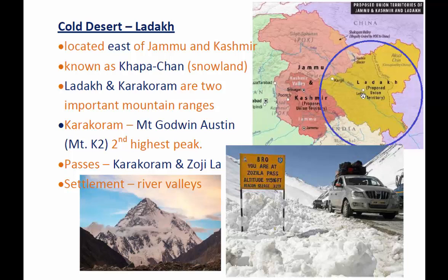Anyway, our concern is to see some of the features of the cold desert of Ladakh. It is also known as 'Kappa Chant' in the language of Ladakh, which means Snow Land. They have two important ranges in Ladakh: the first one is the Ladakh Range and the other is the Karakoram Range. These are the two important mountain ranges in Ladakh.